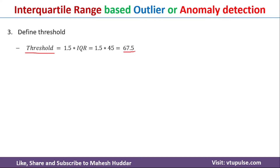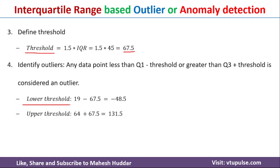Once you calculate the threshold, we need to calculate the minimum and maximum boundaries so that we can identify proper data values and remove outliers. The lower boundary is Q1 minus IQR: 19 minus 67.5, which equals minus 48.5. The upper threshold is Q3 plus IQR: 64 plus 67.5, which equals 131.5.